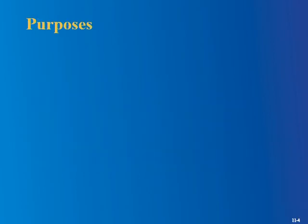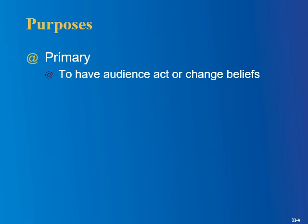Let's look at the purposes of persuasive messages in business communication. They split them into primary and secondary. The primary — the most obvious reason you're trying to persuade somebody — is to have them act or do something. Maybe that's buy a product, adopt a policy, update their software, whatever it may be. Or it could be to change beliefs about something.